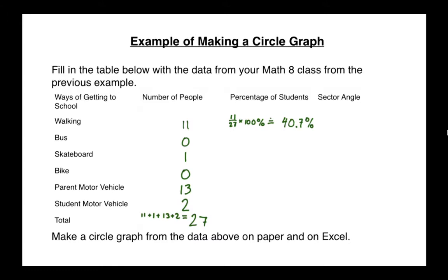So this is how you calculate the percentage of students that walk to school. Now we don't really need to do a calculation for the number that take the bus, it's just zero percent. For the percentage of students that skateboard, there's only one person out of 27, so again we divide one by 27 and then multiply by 100 and this will give us 3.7 percent. With zero students taking a bike that's zero percent. With 13 students going by parent motor vehicle we would divide 13 by 27 multiply by 100 percent, we get 48.1 percent, and the final one, 2 divided by 27 times 100 gives you 7.4 percent.